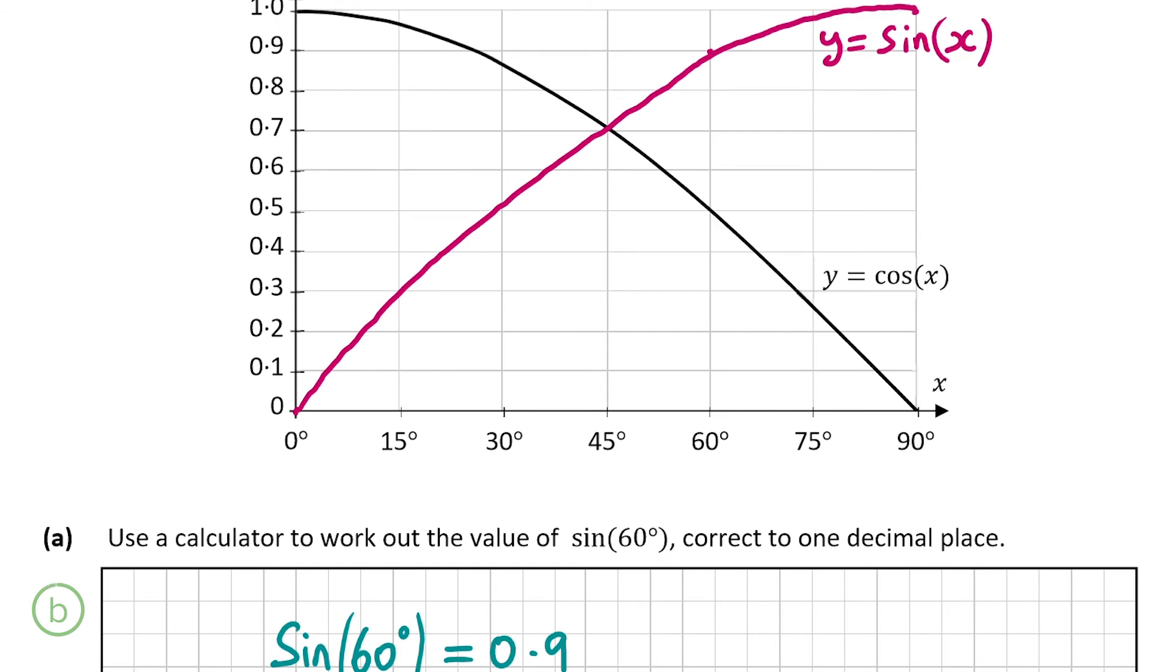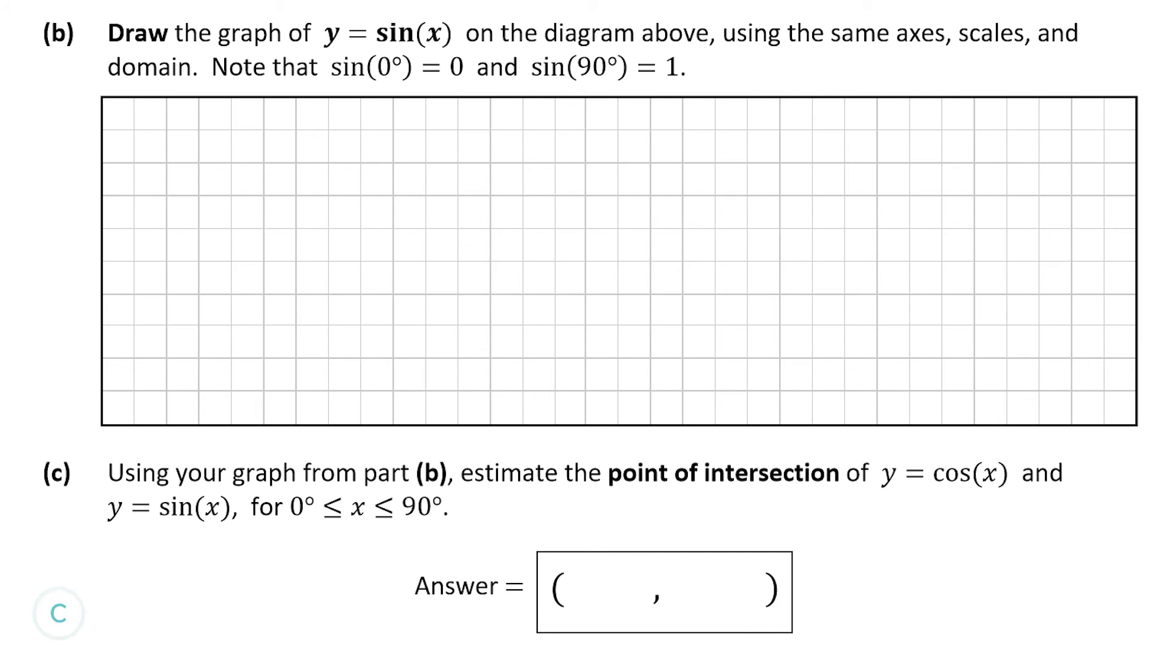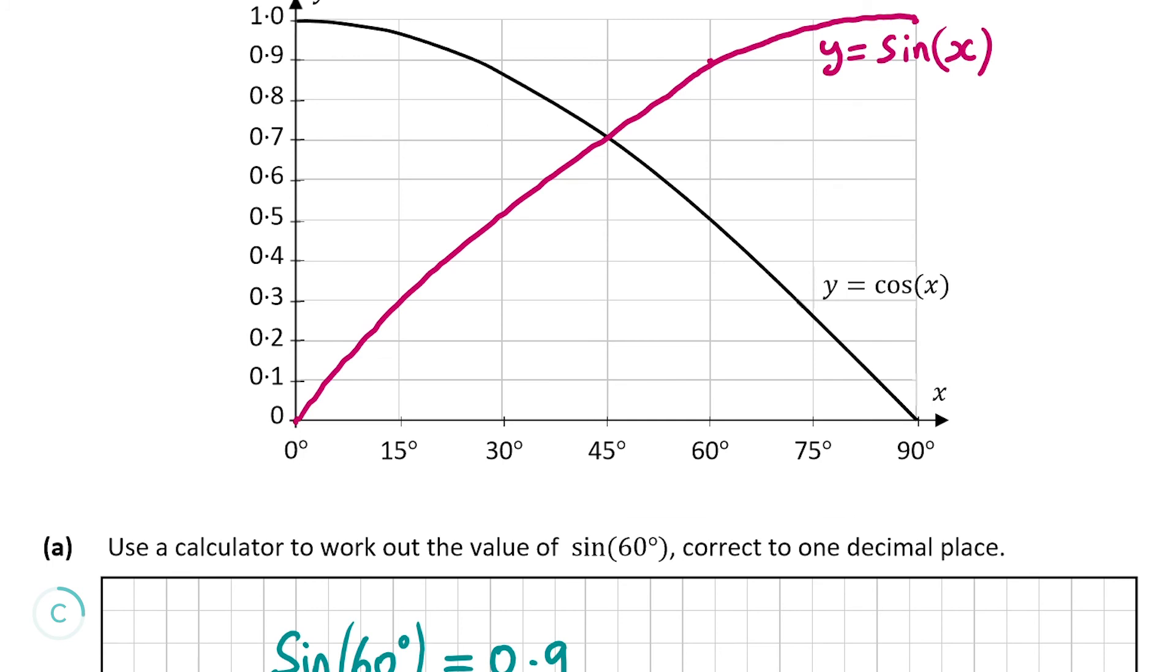Part c asks us to estimate the point of intersection of y equals cos(x) and y equals sin(x) using our graph. This will just be the place that both of the lines cross each other. We can see that they cross each other at this yellow point here.